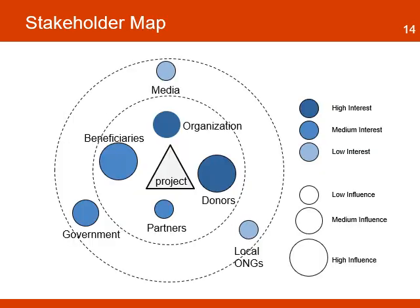Here is another example of a different type of stakeholder map, where interest level is defined by color and influence by the size of the circle. The concentric circles with dotted lines represent proximity to the project and how the level of interest and influence can impact the project. These circles differentiate between internal stakeholders and external stakeholders.